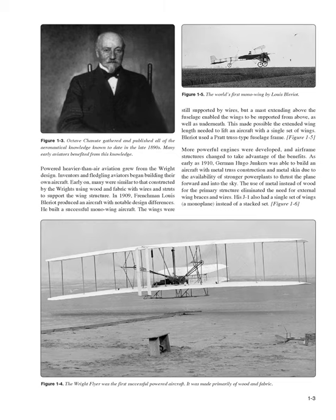In 1909, Frenchman Louis Blériot produced an aircraft with notable design differences. He built a successful mono-wing aircraft. The wings were still supported by wires, but a mast extending above the fuselage enabled the wings to be supported from above as well as underneath. This made possible the extended wing length needed to lift an aircraft with a single set of wings. Blériot used a Pratt truss-type fuselage frame.